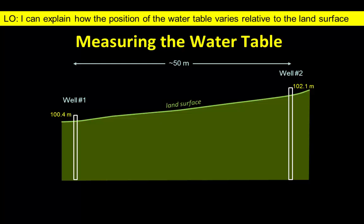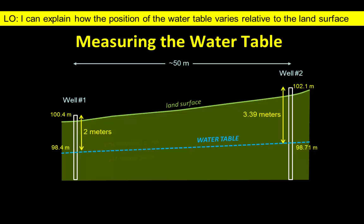The two wells are about 50 meters apart, with well number two about 2 meters higher in elevation. From our measurements, we know the depths to the water table in each well. Based on our interpretation, we can see that the water table is sloping gently downhill, roughly parallel to the slope of the ground surface. Groundwater is flowing downslope towards the small creek below well number one.